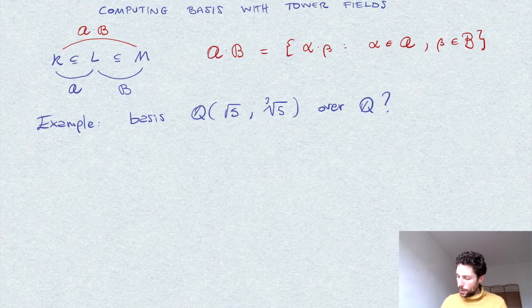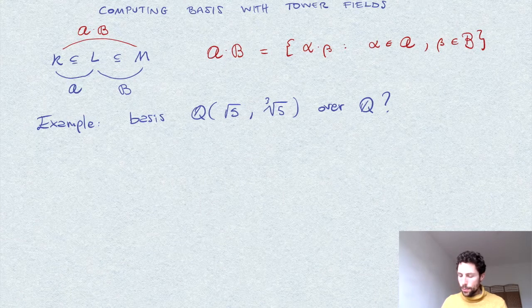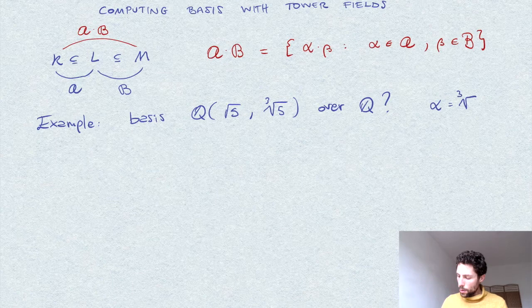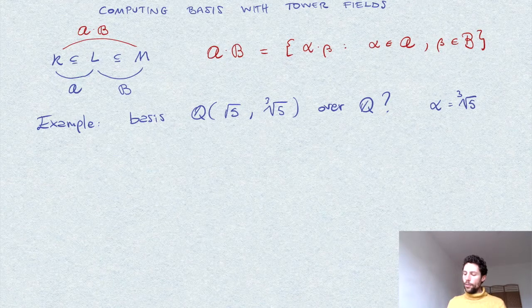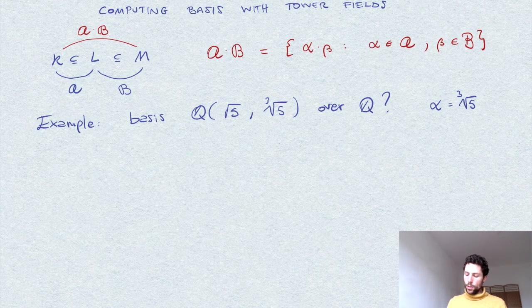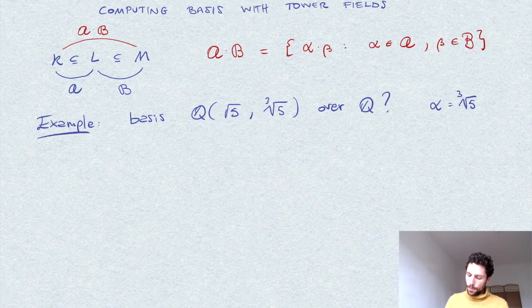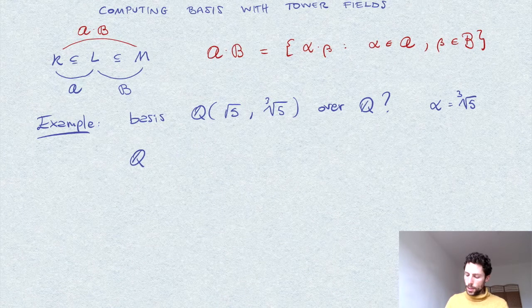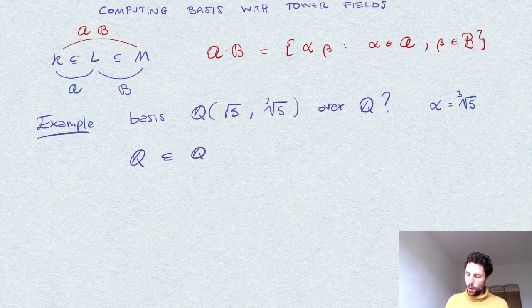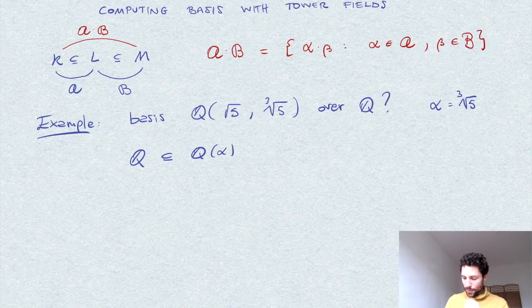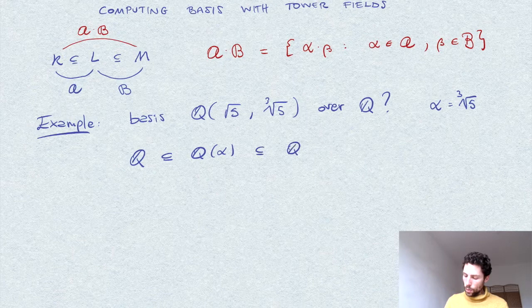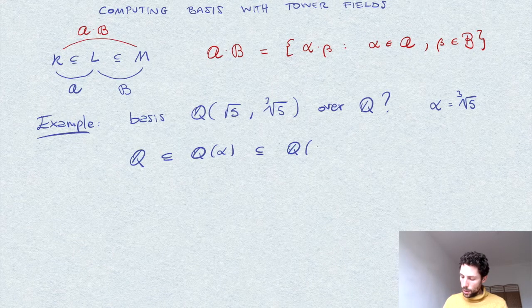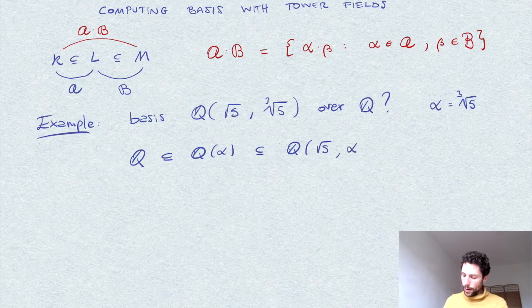Let me call the cubic root of 5 alpha. In this case, I find it convenient to view the extensions of Q into Q of alpha, and then Q of our goal extension, which is square root of 5 and alpha.